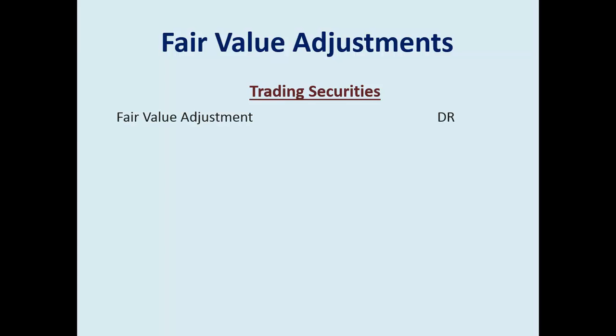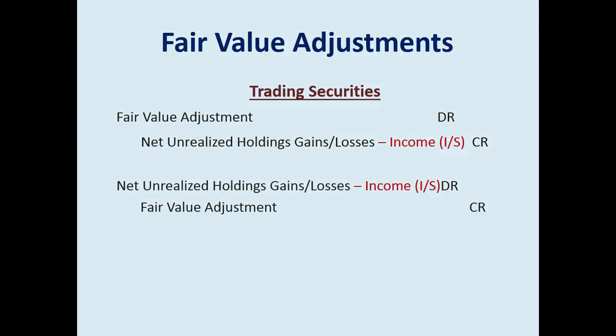Fair value adjustments are the third occasion for journal entries. With trading securities, we use an account called fair value adjustment rather than adjusting directly to the investment account, because we need to track historic cost. This allows us to track both historic cost and fair value. The offset in the journal entry is called net unrealized holdings gains or losses — dash income. It's recorded immediately to the income statement as revenue. The first example is a gain and the second is a loss; these are end-of-year adjusting journal entries.